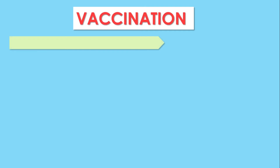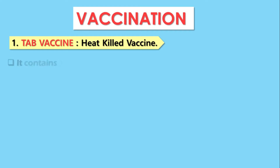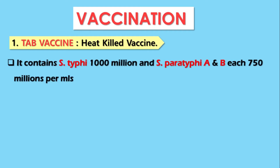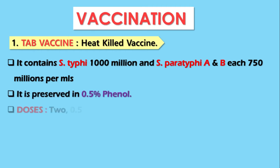Regarding vaccination for Salmonella or enteric fever, the first vaccine is the TAB vaccine, which is a heat-killed vaccine. This vaccine contains strains of S. typhi, S. paratyphi A, and S. paratyphi B. It contains approximately 1,000 million of S. typhi, 750 million of S. paratyphi A, and 750 million of S. paratyphi B per ml of the vaccine. It is preserved in 0.5% phenol.